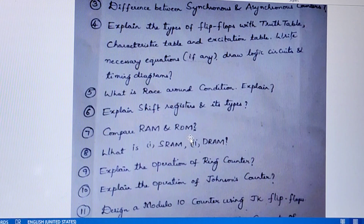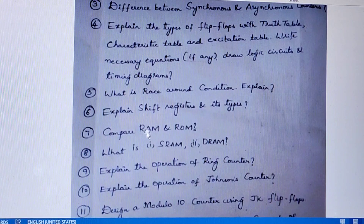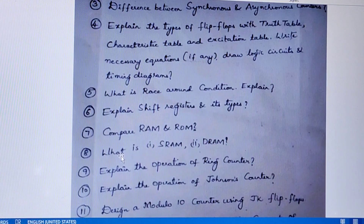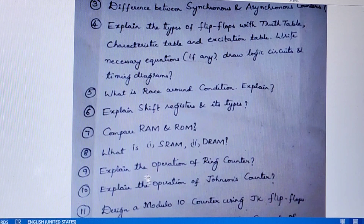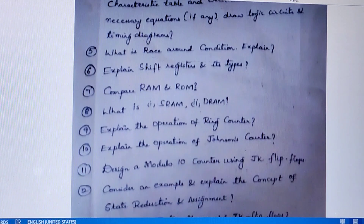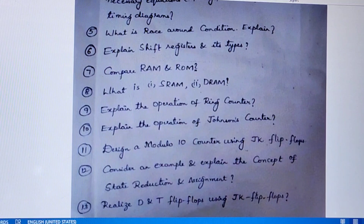Compare RAM and ROM. Compare SRAM and DRAM — remember what is SRAM, what is DRAM, and the differences between them. They may also ask the types of ROM and the differences between those types. Ninth question is explain the operation of ring counter. Tenth, explain the operation of Johnson's counter. Eleventh question is design a modulo-10 counter using JK flip-flop. They may also ask design a modulo-10 counter using T flip-flop.